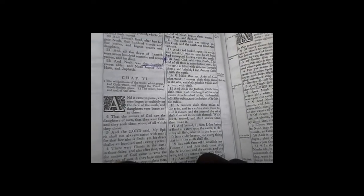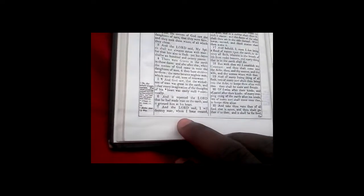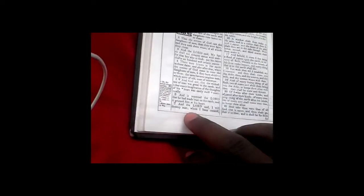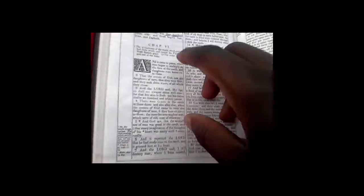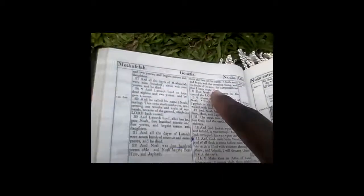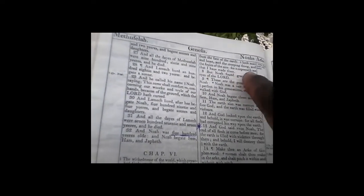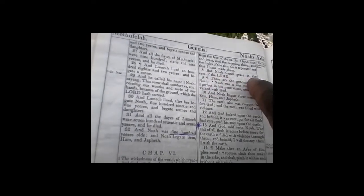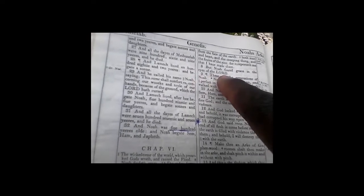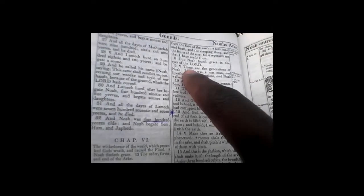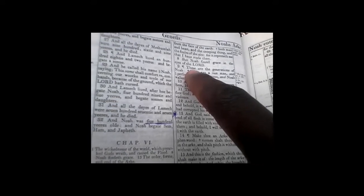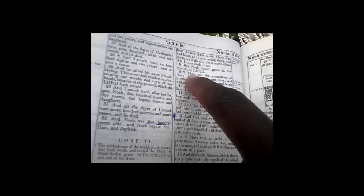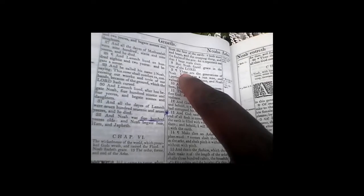Verse 7: And Yehowah said I will destroy man whom I have created from the face of the earth, both man and beast, creeping thing and fowls of the air, for it repented me that I have made them. But Noah found grace in the eyes of Yehowah. He was already a righteous man, and that's what gets you chosen by the Most High.